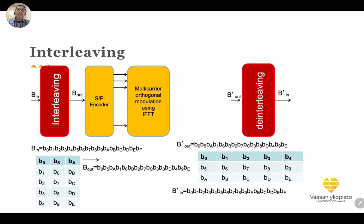Or because of destructive fading — as we have seen before — the received power of the signal can drop considerably and stay in that situation for some time, related to the coherence time of the channel, which depends on the inverse of the Doppler frequency. This time can be maybe a millisecond or a few milliseconds, and in that case we may lose several packets. The problem is that we won't lose just one or two bits but potentially the whole packet, or several consecutive packets.